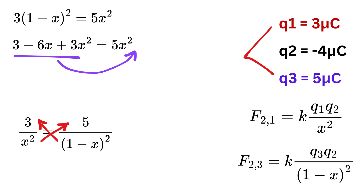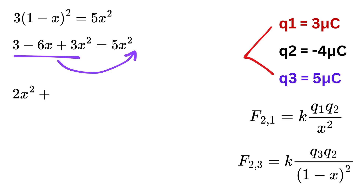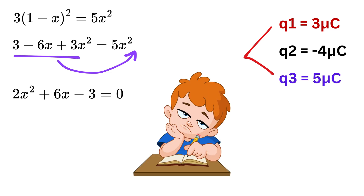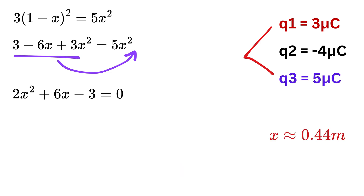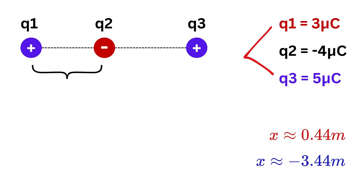Bringing all terms to one side gives 2x² + 6x − 3 = 0. Solving this quadratic equation, we get two values of x: approximately 0.44 meters and approximately −3.44 meters. Therefore, charge q2 should be placed approximately 0.44 meters from q1 to experience no net force.